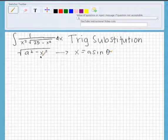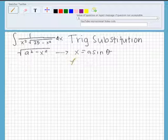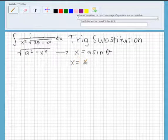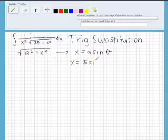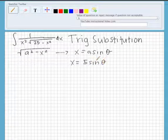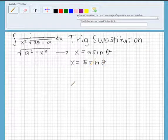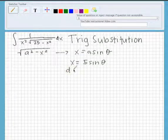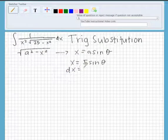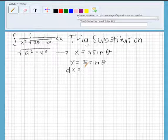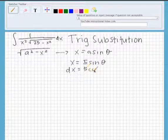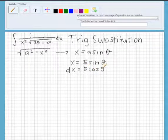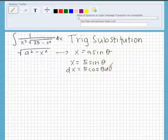So for our problem, it will be x equals 5 sine theta. So we also know that when you take the derivative, it ends up being dx equals 5 cosine theta d theta.